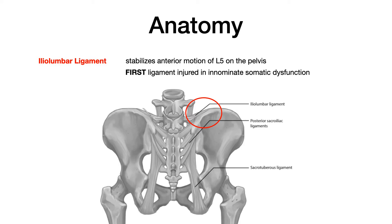On COMLEX, they may not explicitly tell you there's innominate somatic dysfunction, but give findings suggestive of it. They could ask which structure is the first to be injured — the answer is the iliolumbar ligament. Or, in a second or third order question, they might only give you the attachments rather than naming the ligament. You want to know where it runs — it's circled here in red — and know that it stabilizes anterior motion of L5 on the pelvis, and is the first ligament injured in innominate somatic dysfunction.